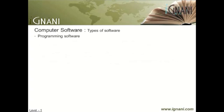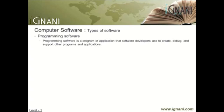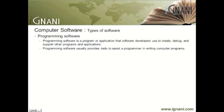Programming software is a program or application that software developers use to create, debug, and support other programs and applications. Programming software usually provides tools to assist a programmer in writing computer programs and software using different programming languages in a more convenient way. Compilers, debuggers, and interpreters are all examples of programming software.